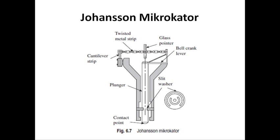You can easily see the relationship between the length and the width of the strip. So these are the two types of mechanical comparator: the first one is the dial indicator and the next one is the Johnson Mikrokator.